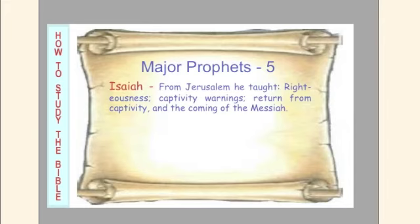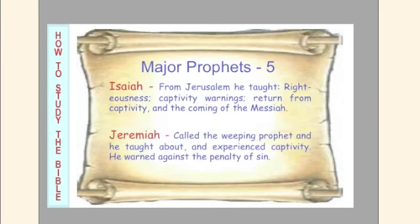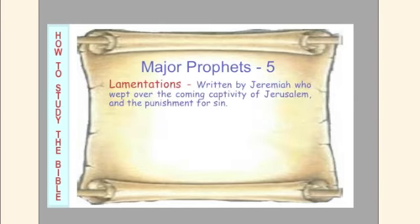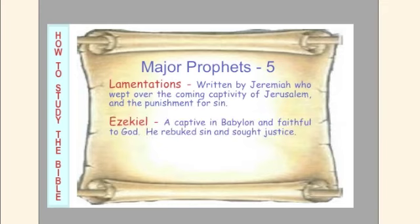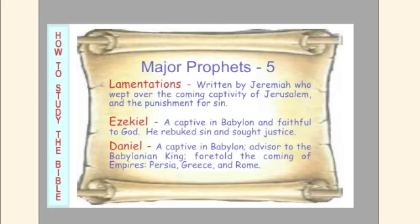Major Prophets — five. Isaiah, from Jerusalem, taught righteousness, captivity warnings, return from captivity, and the coming of the Messiah. Jeremiah, called the weeping prophet, taught about and experienced captivity, and warned against the penalty of sin. Lamentations, written by Jeremiah, who wept over the coming captivity of Jerusalem and the punishment for sin. Ezekiel, a captive in Babylon and faithful to God, rebuked sin and sought justice. Daniel, a captive in Babylon, served as advisor to the Babylonian king, and foretold the coming of empires — Persia, Greece, and Rome.